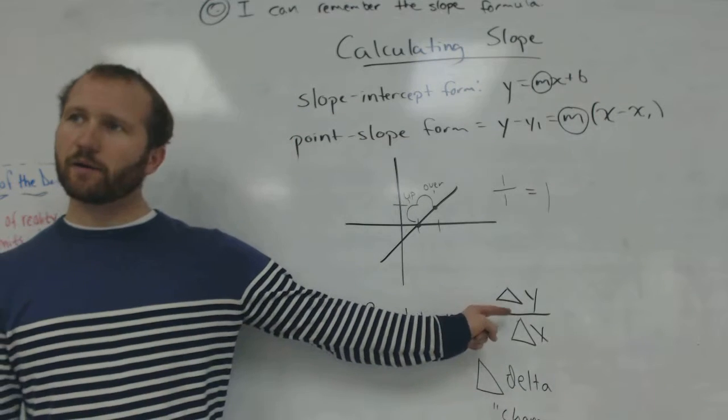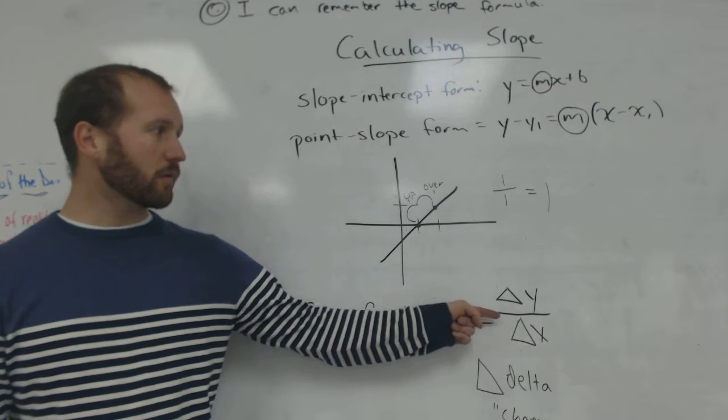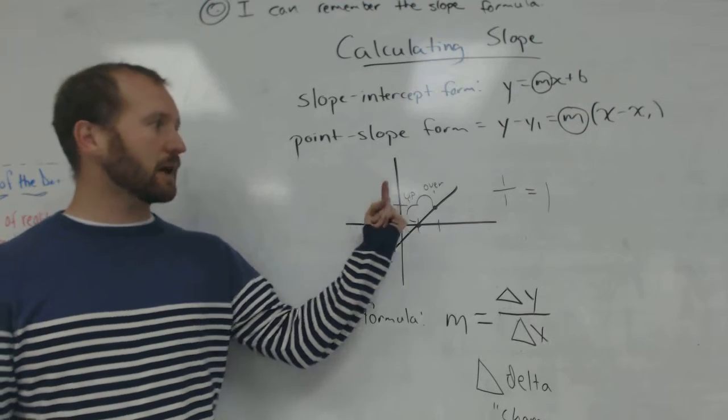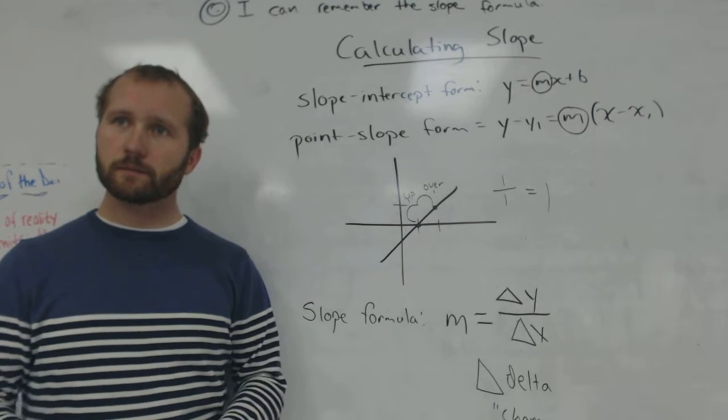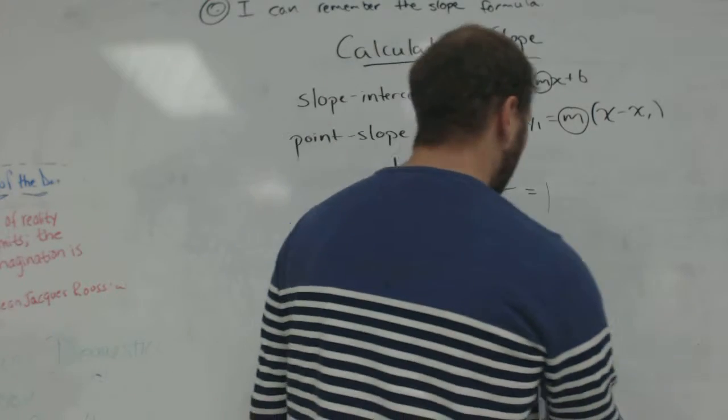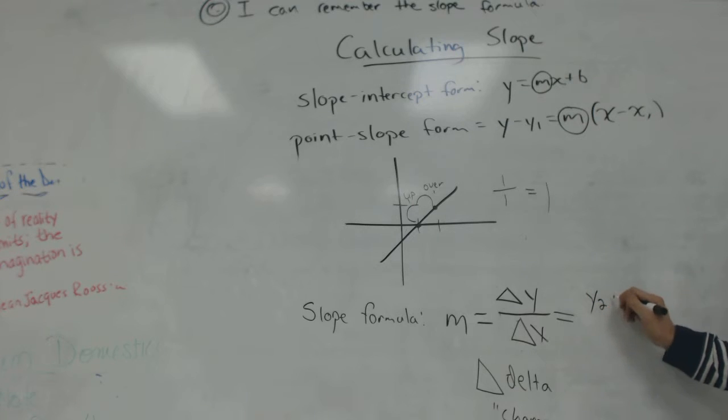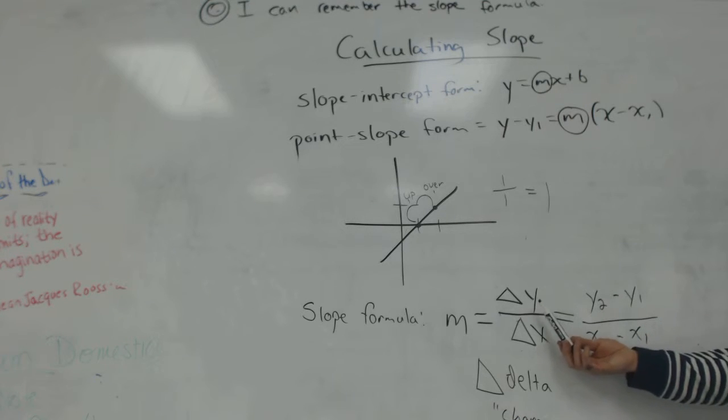The change in y over the change in x. How much does y change? That's how much it goes up. Over how much does x change? That's how much it goes over. Or, and this form is going to be a little bit more helpful to you on your homework tonight, y2 minus y1 over x2 minus x1. These are really the same thing. Change in math means difference. A change is a difference. So that means that we have to subtract.